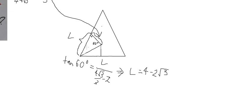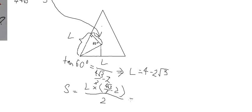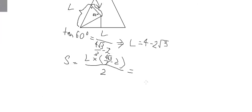Now we can find the area of one triangle. The area S equals this side length multiplied by the corresponding height divided by 2. We get the answer: (14√3 - 24) / 3.